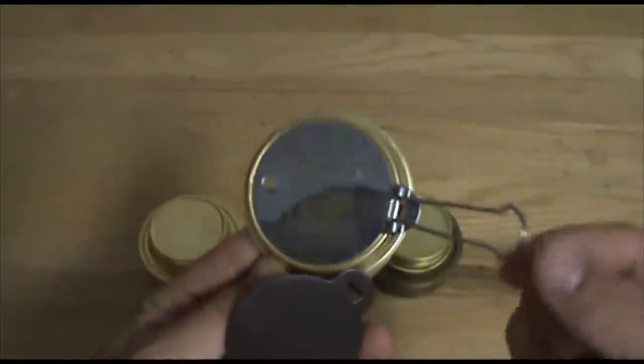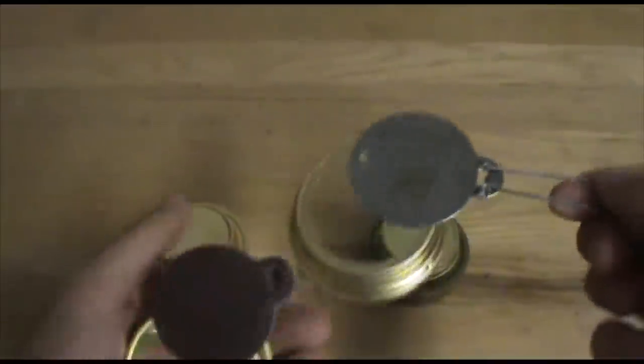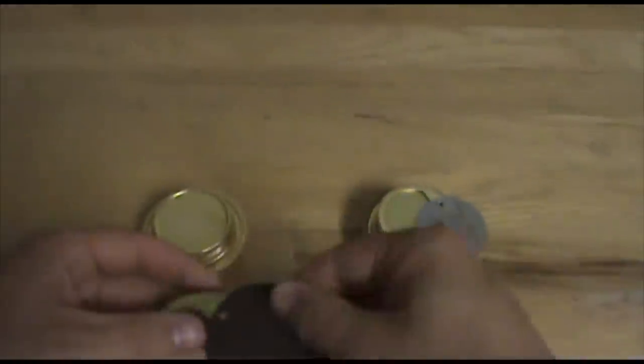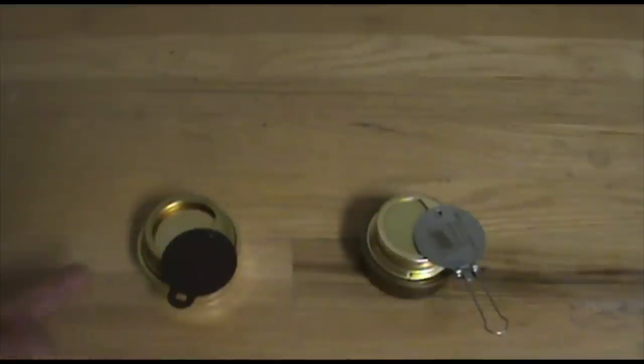But the Esbit has this nifty little hinged handle out here, which is pretty nice. As that's sitting on the stove, the flame is looking right up on it, so it gets pretty hot.